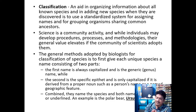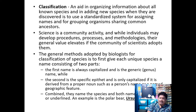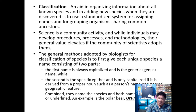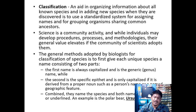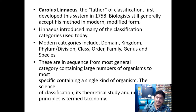The first part of the scientific name — the genus — is always capitalized, while the second part — the specific epithet — is only capitalized if it is derived from a proper noun such as a person's name or a geographic feature. Both names are italicized or underlined. The first letter of the genus is capitalized, the species name is lowercase, and both must be italicized or underlined.